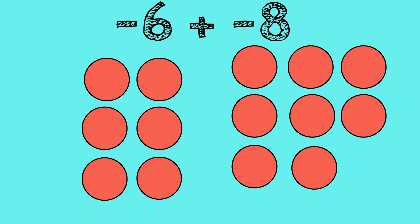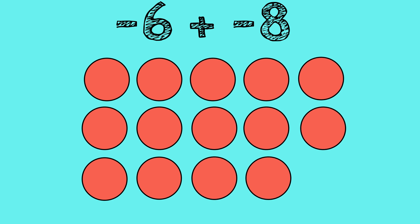we can't form any zero pairs. We simply have to combine or count the total numbers of red counters.